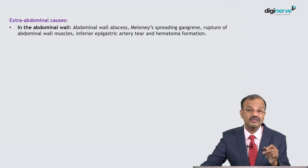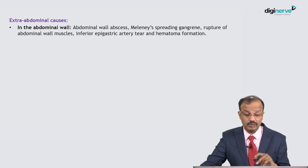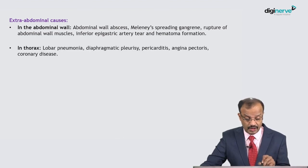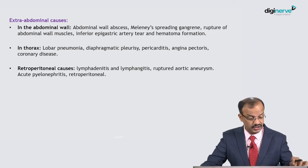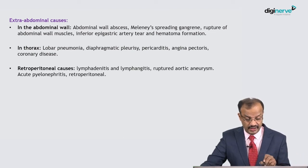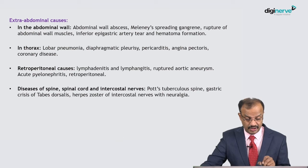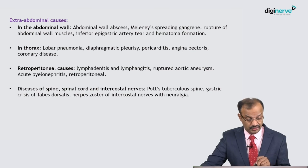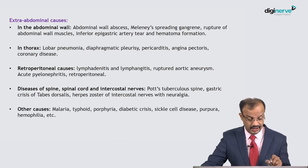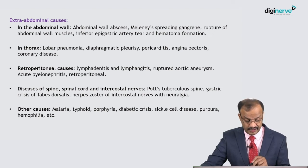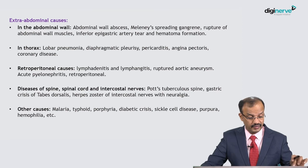Extra-abdominal causes: in the abdominal wall — abscess, Meleney's spreading gangrene, rupture of abdominal muscles, inferior epigastric artery tear and hematoma. In the thorax — lobar pneumonia, diaphragmatic pleurisy, pericarditis, angina pectoris, coronary disease. Retroperitoneal causes — lymphadenitis, lymphangitis, ruptured aortic aneurysm, acute pyelonephritis. Spinal causes — spinal cord, intercostal nerve problems, tubercular spine, gastric crisis of tabes dorsalis, intercostal neuralgia.